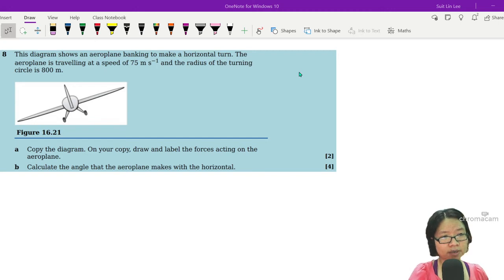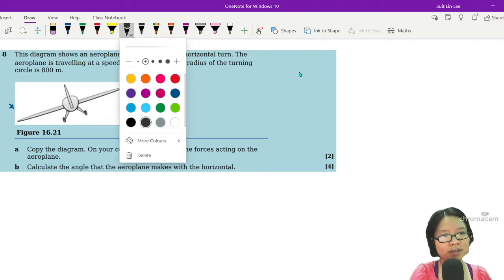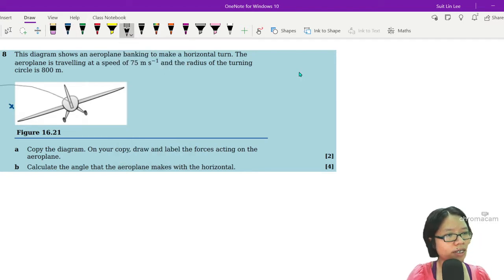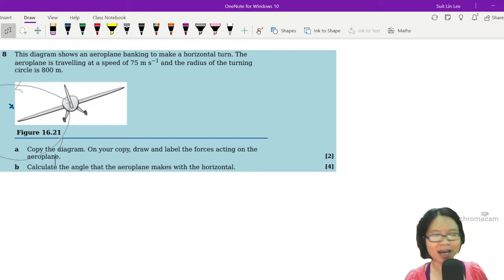If it's a horizontal turn, I know the center of circle is somewhere here, so the aeroplane is about to make a turn in this direction.